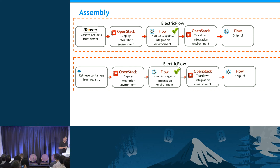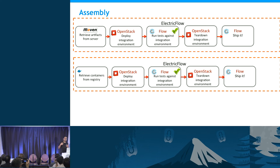I wanted to do a before-and-after of monoliths versus microservices. The assembly piece is actually kind of similar. Pom files have dependencies listing what jars you should have — that's Maven. I'm explaining this in Java terms because that's what I feel comfortable with, but if you're a Ruby or Node person you can mentally substitute those technologies. The assembly piece bears some resemblance between monoliths and microservices.